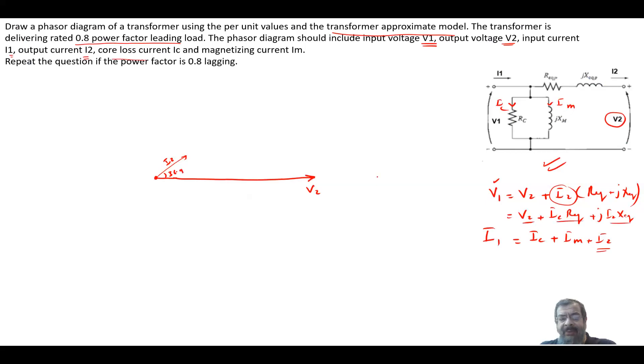We need to add these three vectors to get V1. I will move this vector in parallel, so this is I2. When we move vectors in parallel, we're not changing anything. Now we have I2 times R-equivalent. R-equivalent is just a scalar, so this vector will either increase or decrease. This is I2 times R-equivalent.